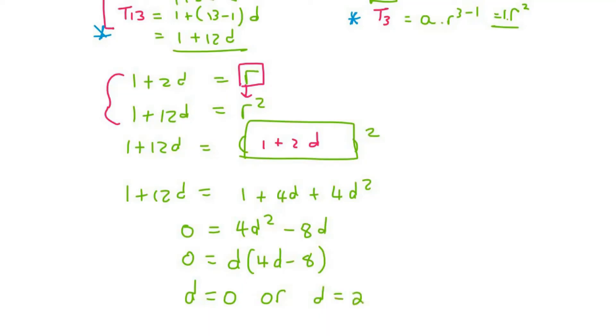Now that we have d, we can work out r. Because r is over here. So r is equal to 1 plus 2d. So if d is equal to 0, then r would be 1 plus 2 times 0, which is equal to 1. If d is equal to 2, then r would be equal to 1 plus 2 times 2. And so r would be 5.